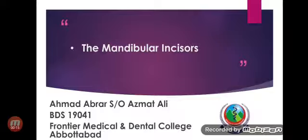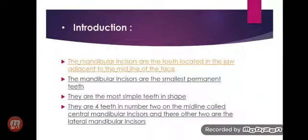The mandibular incisors are the teeth located in the jaw adjacent to the midline of the face. They are the smallest permanent teeth and, regarding shape, they are the most simple teeth. There are four teeth in number — two on the midline called mandibular central incisors, and the other two are the mandibular lateral incisors.